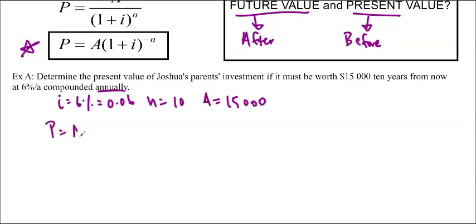So, P is equal to A times 1 plus I to the negative N. Of course, we should be writing the formula out, and we will just write this in here, 1.06 to the negative 10. You type it into your calculator, and you should get $8,375.92.